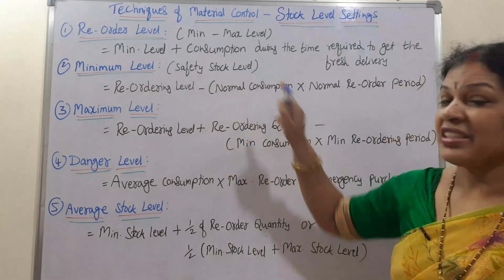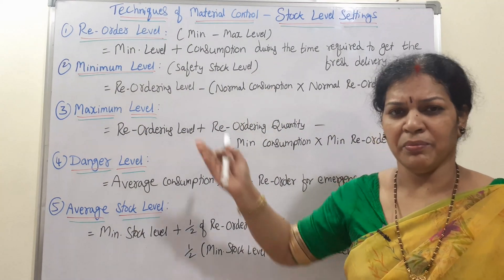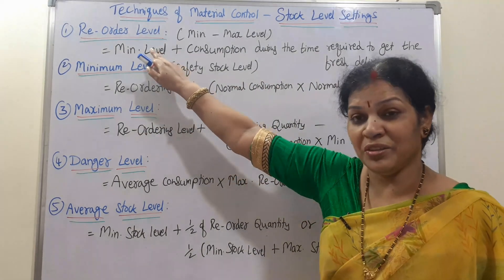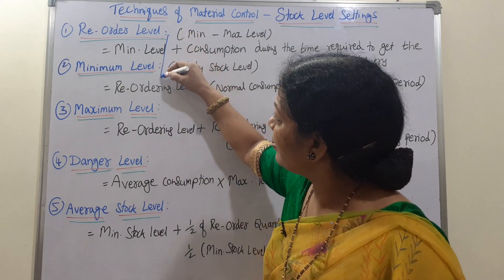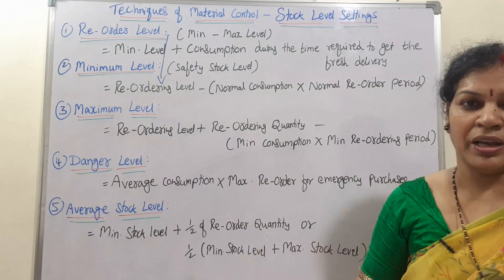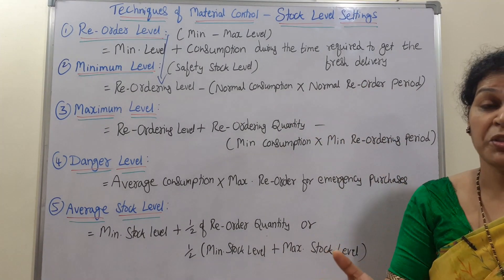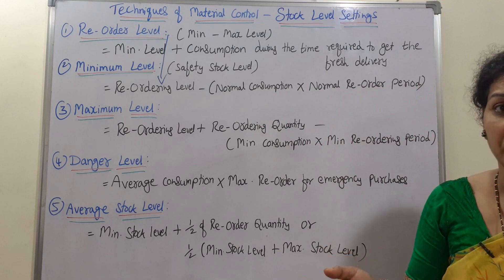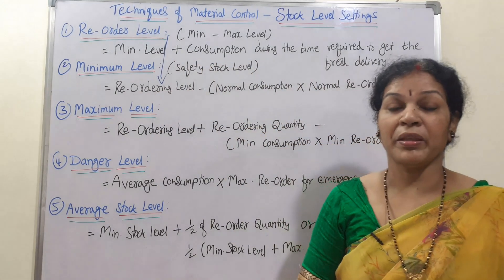This minimum level is also called the safety stock level. Safety stock means the minimum we have to keep — it is another name for minimum level. The formula is: reordering level minus normal consumption into normal reorder period. That is, how much do you normally consume, multiplied by how much time you normally take to reorder the material. This gives you the minimum level.